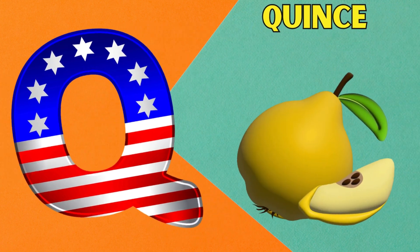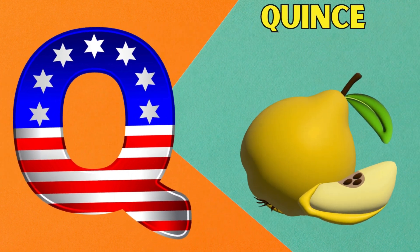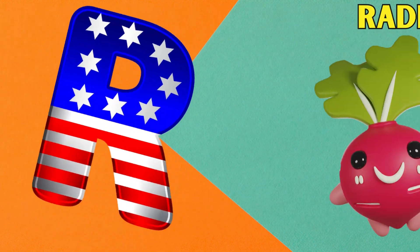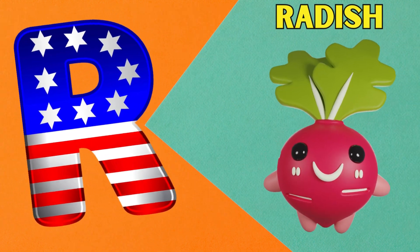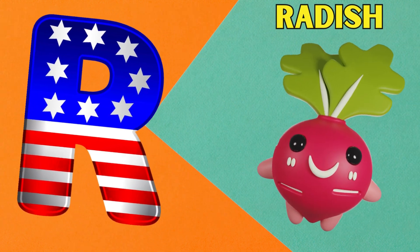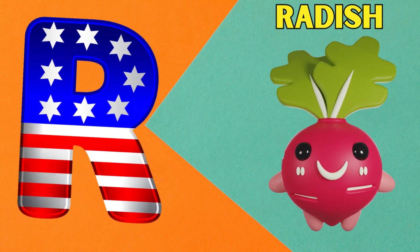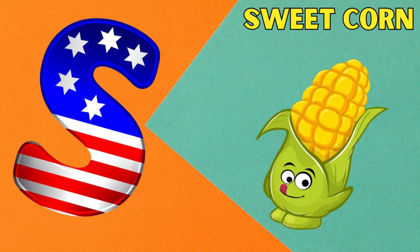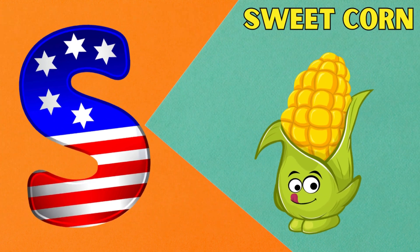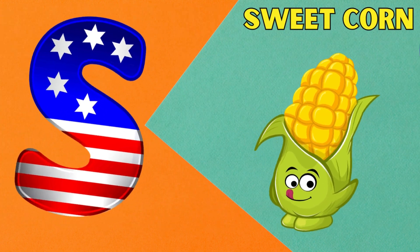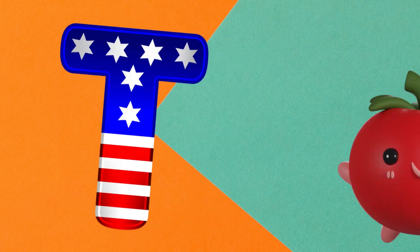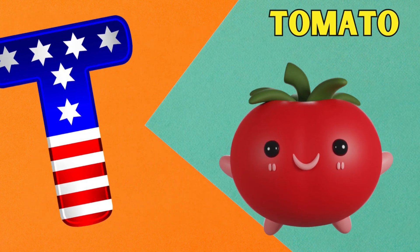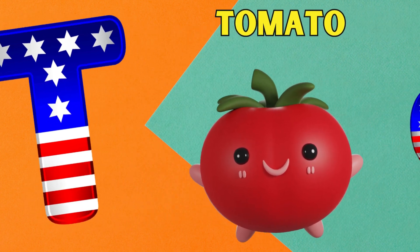Q is for quince — quh, quince. R is for radish — r, radish. S is for sweet corn — s, sweet corn. T is for tomato — t, tomato.